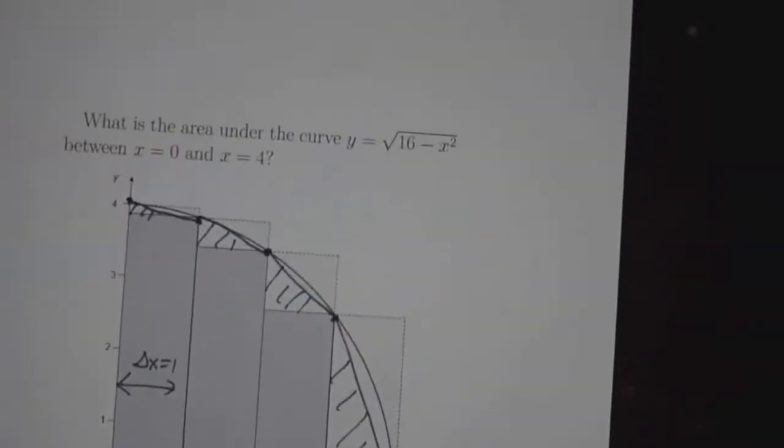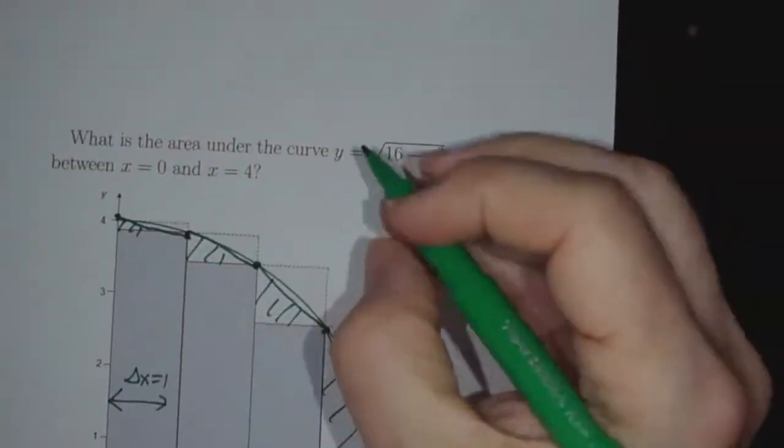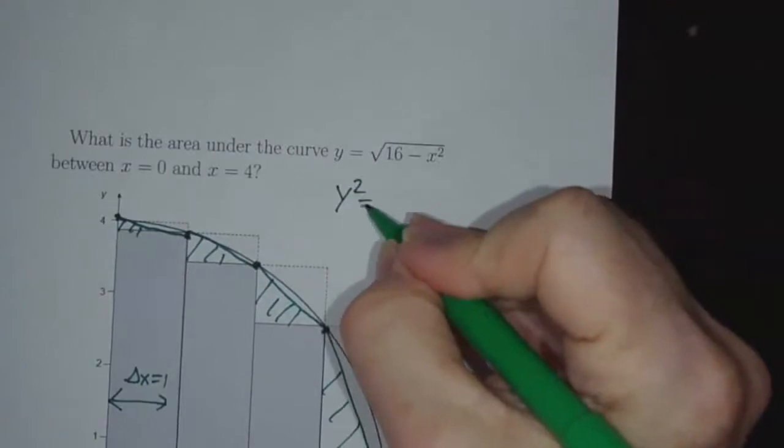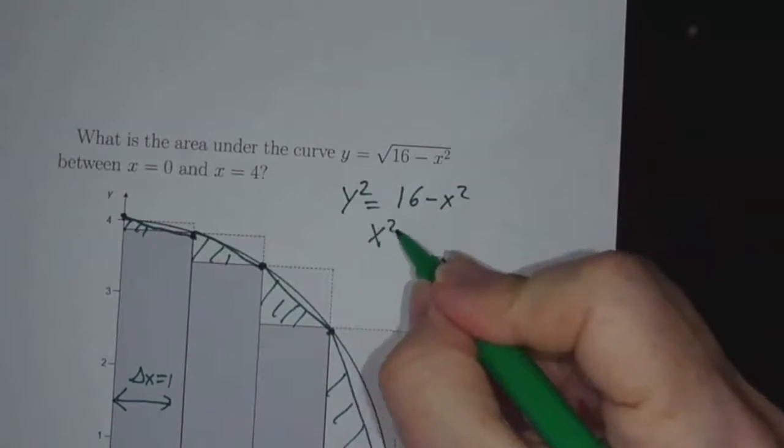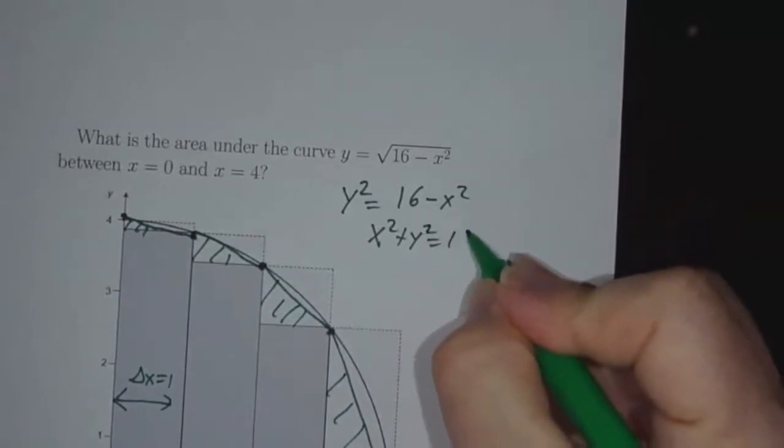One last thing. This curve, you could rewrite it as y squared is 16 minus x squared, or x squared plus y squared equals 16.